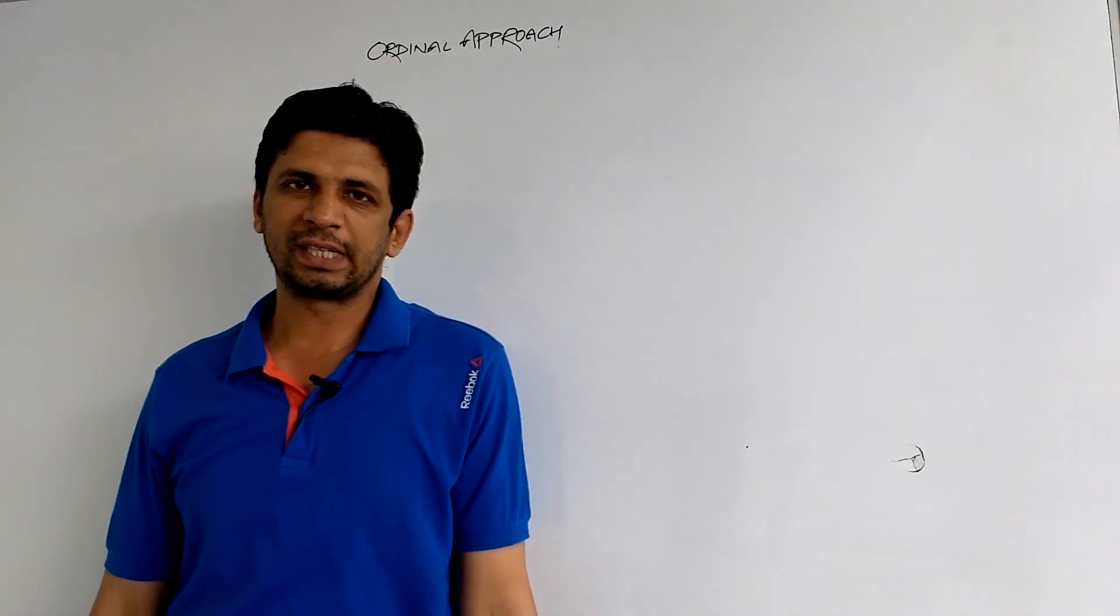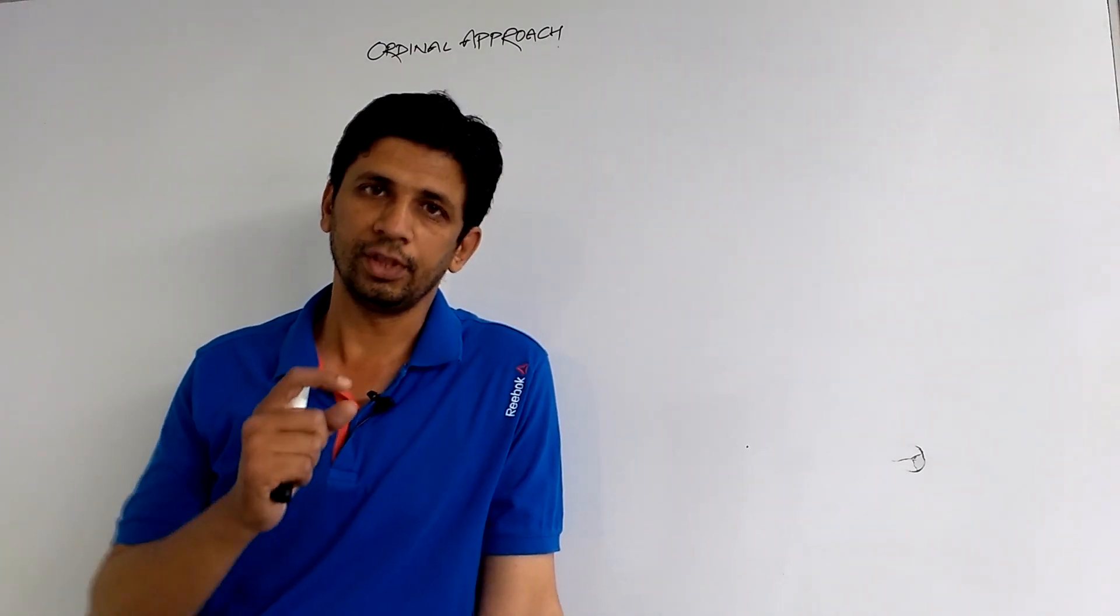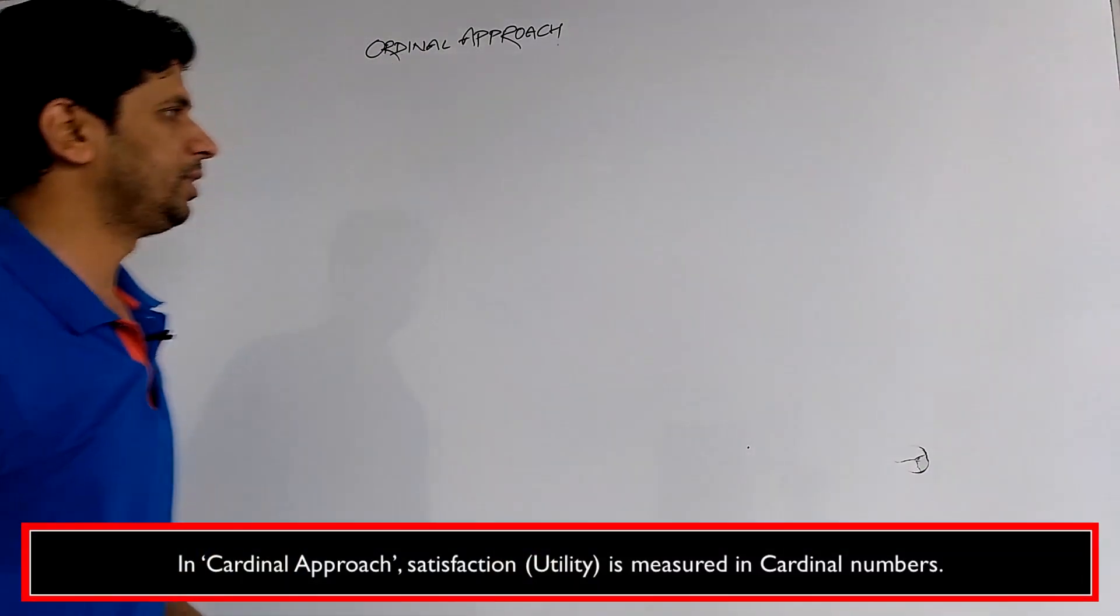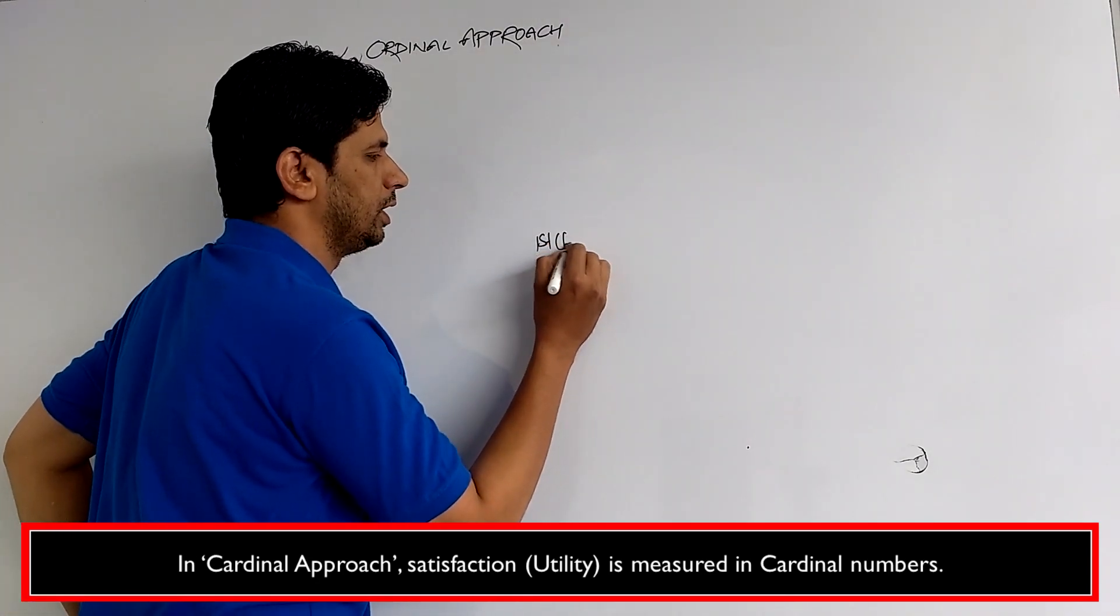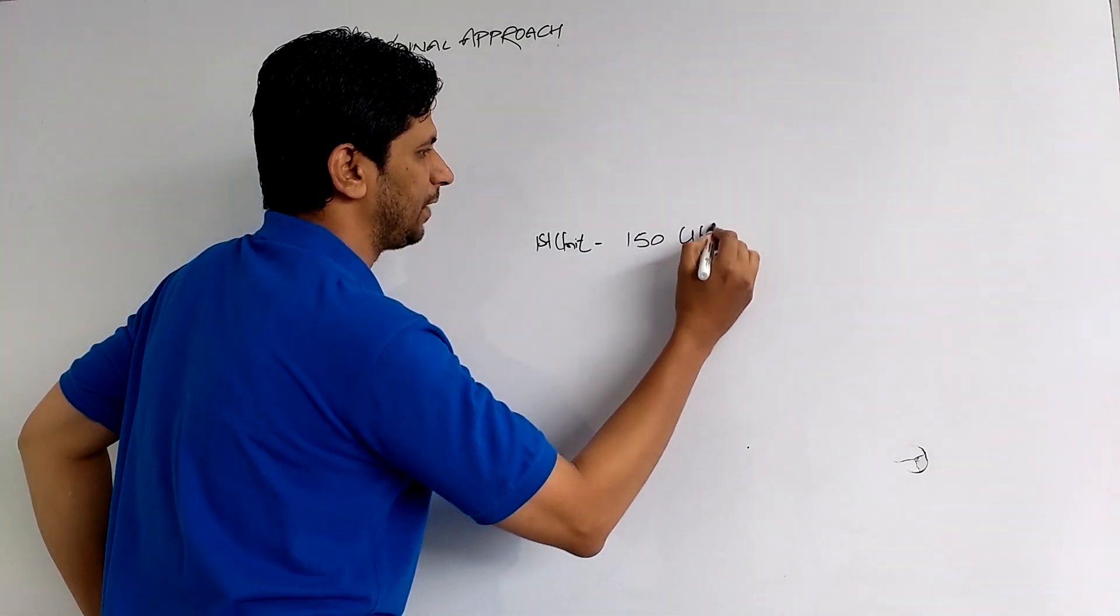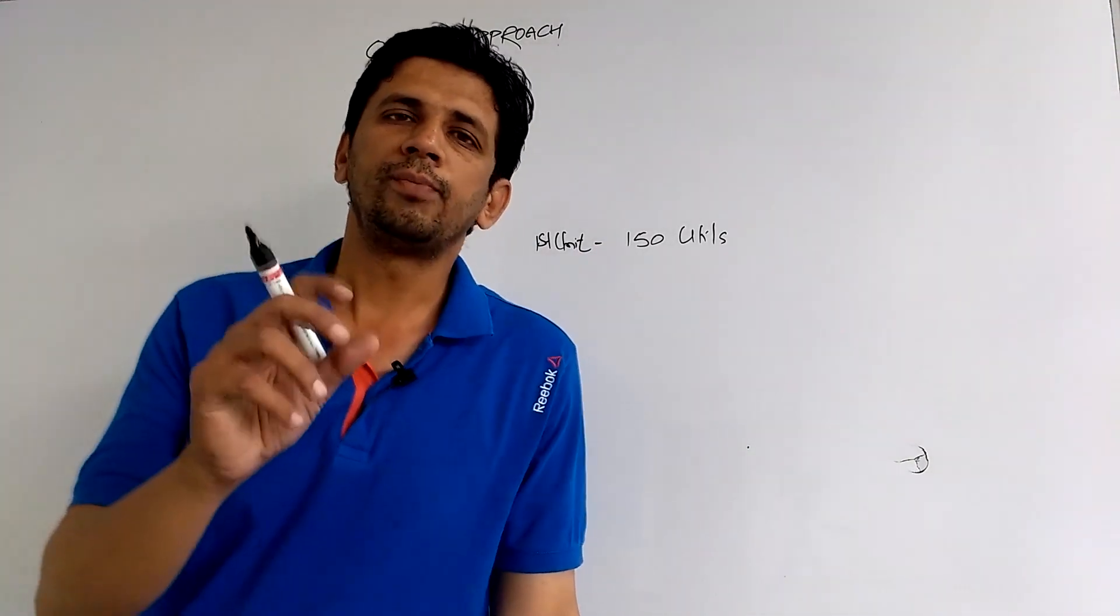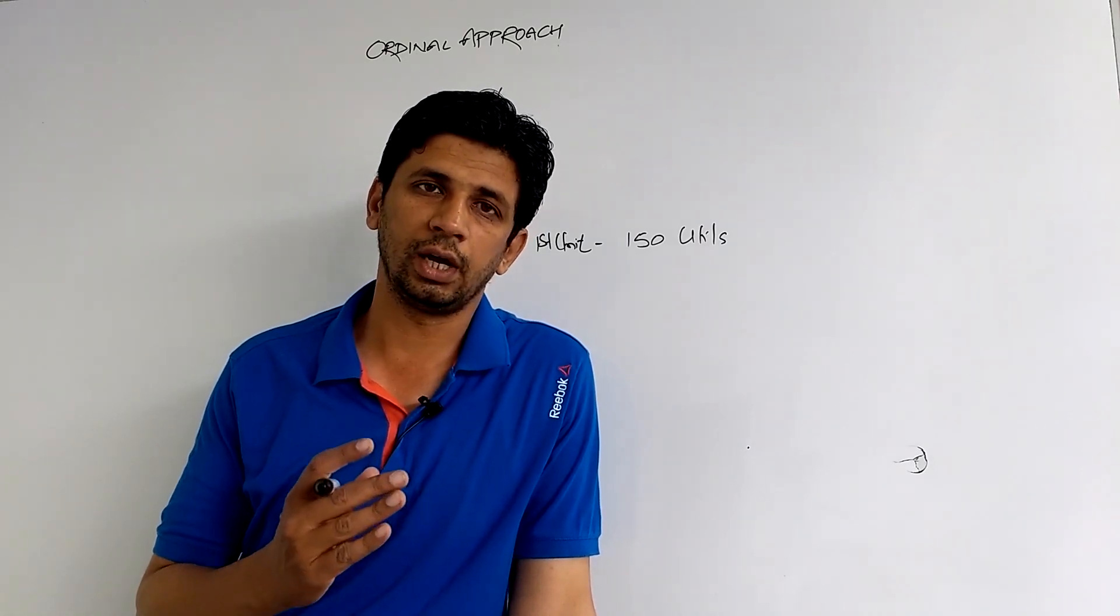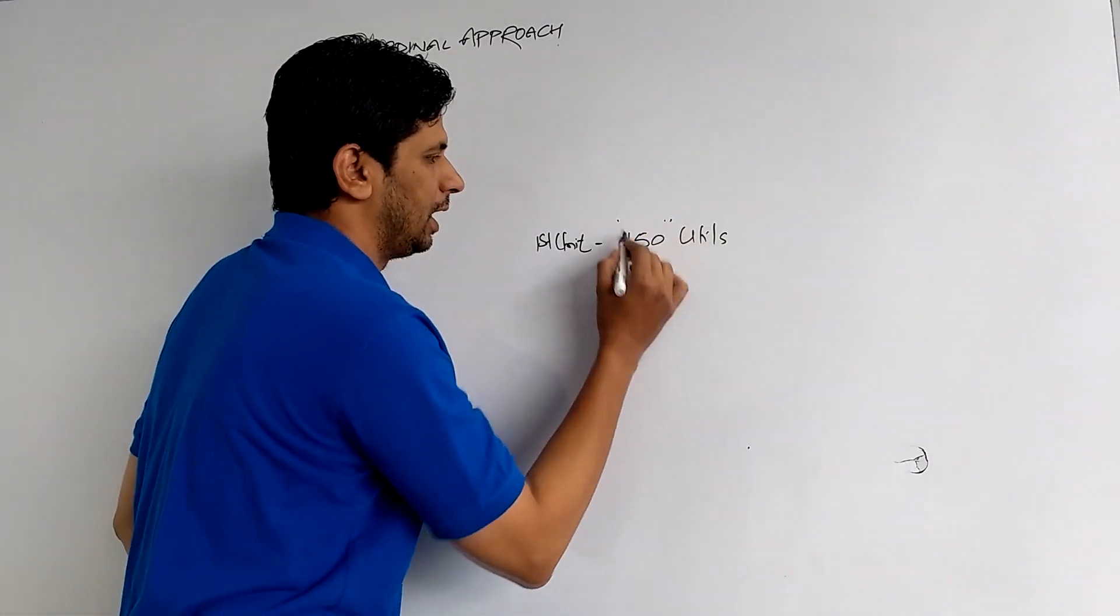We have already discussed in the cardinal approach that satisfaction and utility is measured in some absolute value, in some unitary sense. We saw this in the cardinal approach, that if you consume your first unit, then you get the satisfaction of 150 utils. The measurement of utility in cardinal numbers is one of the basic features of cardinal approach, and this is the biggest drawback.